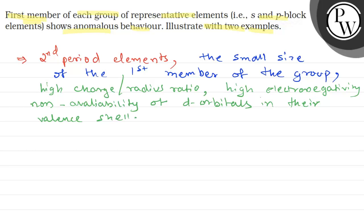These are some of the reasons for the anomalous behavior of first member of each group of representative elements, that is s and p block elements. For example, if we consider the first member of each group of p block elements...